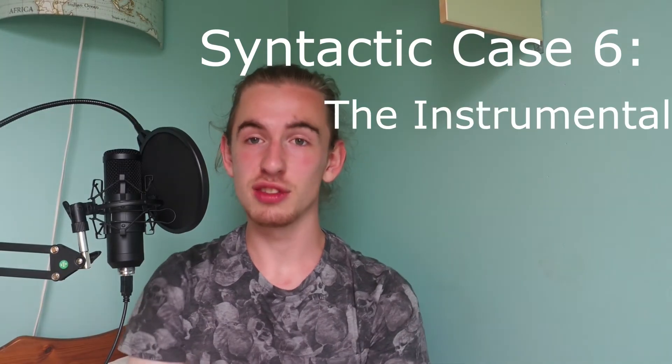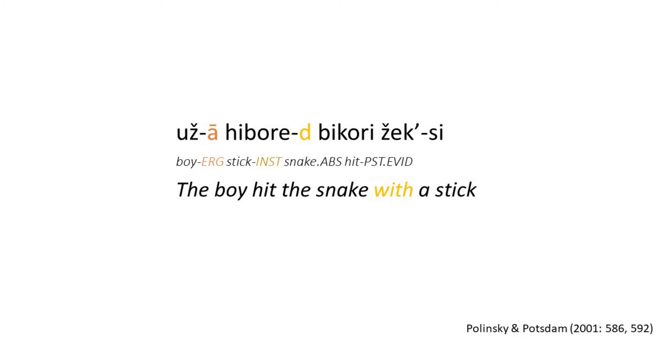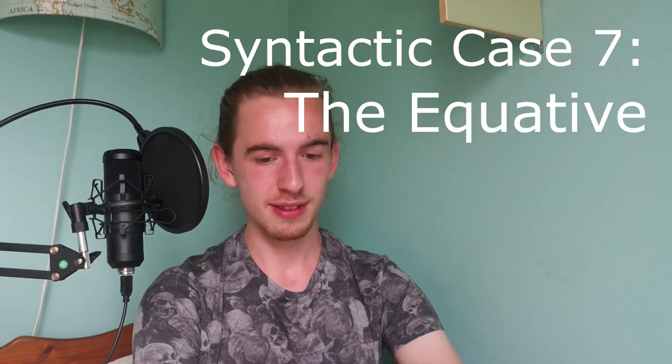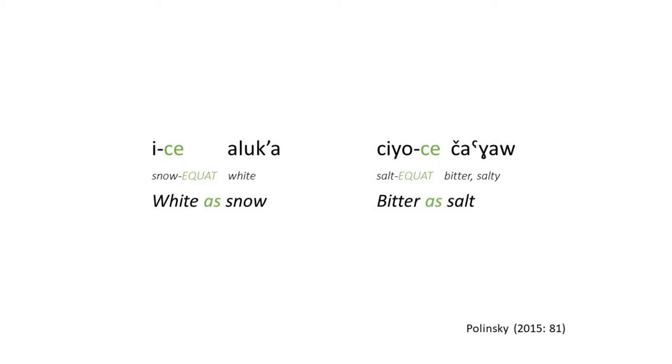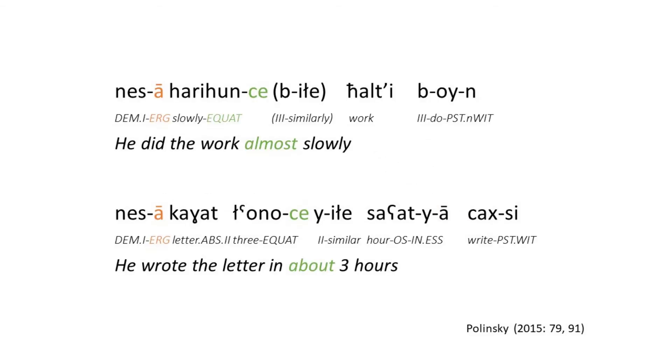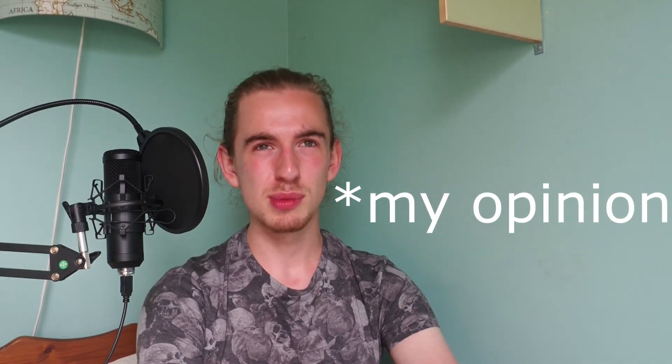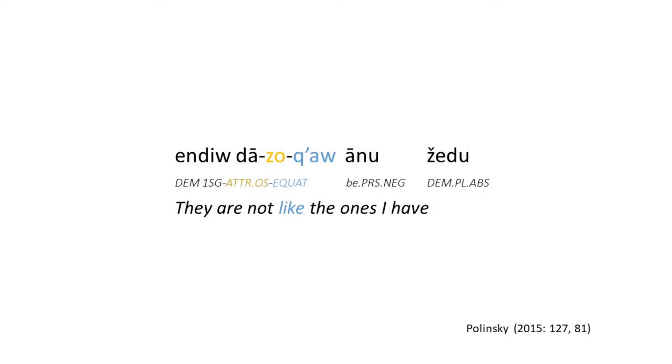Syntactic case number six is the instrumental - used to express 'with', 'using', or 'by means of' a noun: the instrument you use to do something, like 'the boy hit the snake with a stick'. Syntactic case number seven is the equative - only kind of a noun case. It's used to say something is like or as something else. It does get added to the oblique form of the noun, but it can also be added to adverbs and numerals - I would say this isn't really a noun case, more of just a modifier. Syntactic case number eight is the equative strikes back. The grammar just kind of lists it without any explanation or example, and the other paper I was using only has it once and also does not explain why it's used as opposed to the other one.